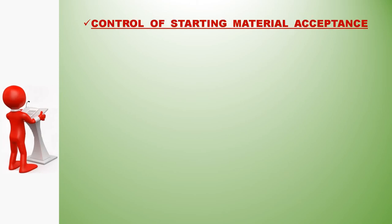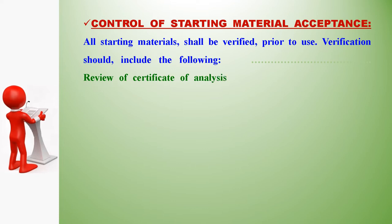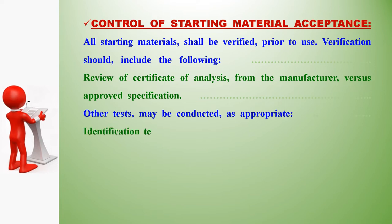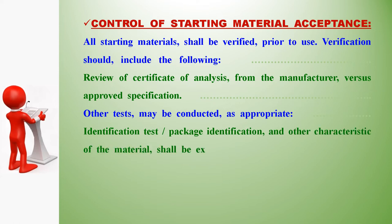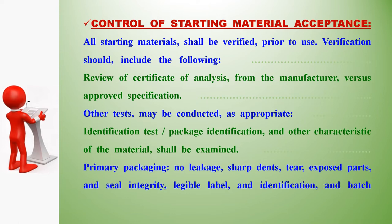Control of starting material acceptance: all starting materials shall be verified prior to use. Verification should include review of the certificate of analysis from the manufacturer versus approved specification, and other appropriate tests. Identification tests, package identification, and other characteristics of the material shall be examined, including primary packaging for leakage, tears, and seal integrity, legible label, identification, and batch number. Frequency: every batch of manufacturer's batch.